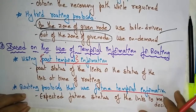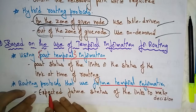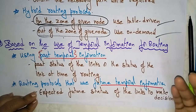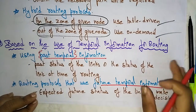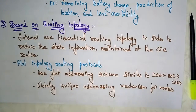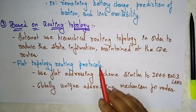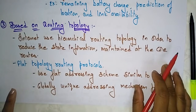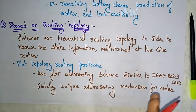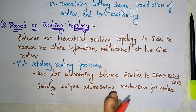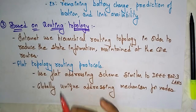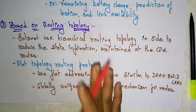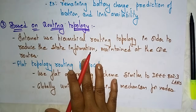Another approach is routing protocols that use future temporal information — using the expected future status of the links to make routing decisions. This involves estimation, a kind of trial and error, to select the path. The third technique includes node lifetime: the remaining battery life, prediction of location, and link availability are also considered. These are all temporal — not permanent — information, and they deal with active nodes only. This entire second classification covers past information, future information, and node lifetime.